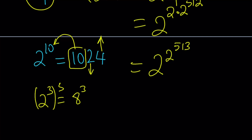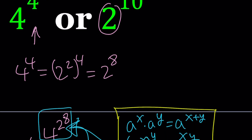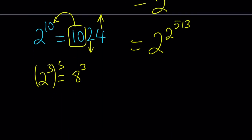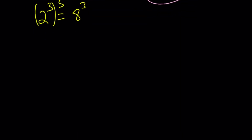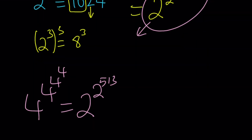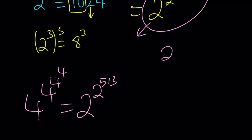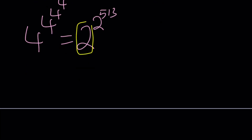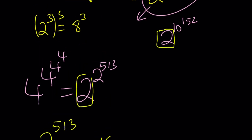So our first number — 4 to the power 4 to the power 4 to the power 4 — equals 2 to the power 2 to the power 513. We're comparing it to 2 to the power 10 to the power 51. Both have the same base 2, so I need to compare the exponents: 2 to the power 513 versus 10 to the power 51. How do we compare these two numbers?